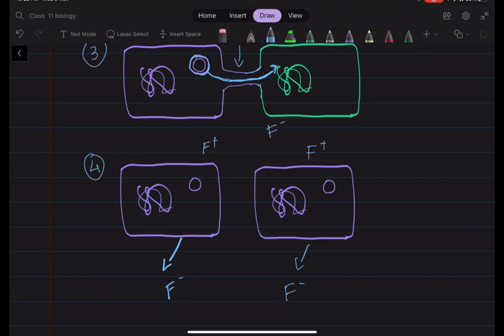So now you understand why I told it was unidirectional. So now what happens is that this F-plus, it cannot do the same to the F-plus. Because as soon as the F-minus receives from F-plus, it becomes F-plus. So that is why the other way round cannot happen.